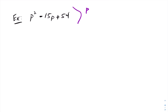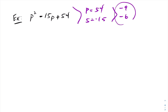Here my product is 54 and my sum is negative 15. Go ahead and pause the video and try to find a combination that works. The combination that works is negative 9 and negative 6. So this will factor into p minus 9 times p minus 6.